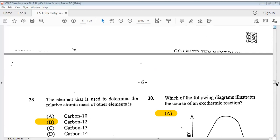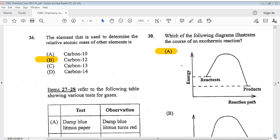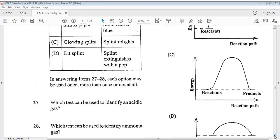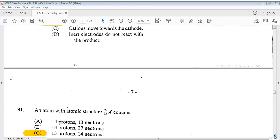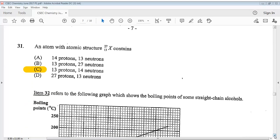Question 29 says, which of the following diagrams illustrates the course of an exothermic reaction? The answer is A. Let's go on to number 31. So you can take a look at question 31. The answer is C for that.